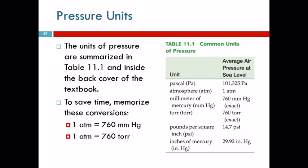So 760 millimeters of mercury is equivalent to 29.92 inches of mercury, which is equivalent to one atmosphere of pressure. So here's a table from your textbook where they summarize these different units. So atmospheres are important. Millimeters of mercury and torr are important.